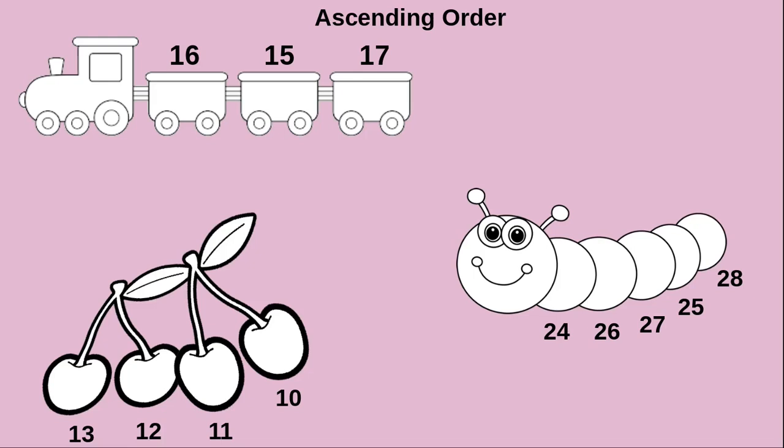Now here they have given 2-digit numbers. We are going to see how to arrange 2-digit numbers in ascending order. First example: 16, 15, 17. To arrange, we look at the last digit: 6, 5, 7. The smallest last digit is 5, so 15 is the smallest number — we write 15 first. Next comparing 6 and 7, the smallest is 6, so 16 comes next. At last, 17 is remaining, so we write 17. Now we have arranged these numbers in ascending order.